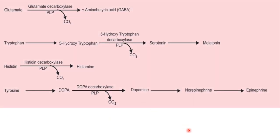This picture shows the synthesis of various biogenic amines by PLP-dependent decarboxylation reactions: synthesis of GABA, an inhibitory neurotransmitter, from glutamate; synthesis of serotonin and melatonin from tryptophan; synthesis of histamine from histidine; and synthesis of catecholamines like dopamine, norepinephrine, and epinephrine from tyrosine.